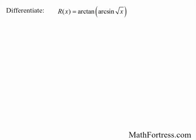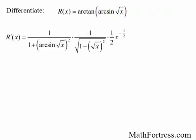Differentiate the expression arctangent of arcsine of the square root of x. Here we have nested functions, so we have to use the chain rule twice. For the first chain rule, the outer function is arctangent and the inner function is arcsine of the square root of x. Applying the chain rule twice, the derivative is equal to 1 over (1 plus arcsine of square root of x squared), times 1 over the square root of 1 minus (square root of x) squared, times one-half x to the negative one-half.